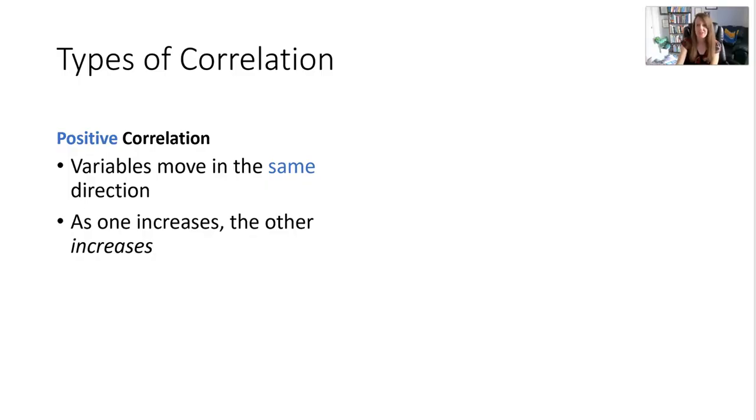Let's start by addressing correlation. That's the association between two variables, and the correlation tells us both the strength and the direction of the relationship between two variables.